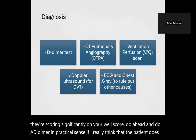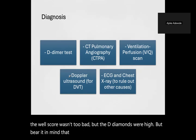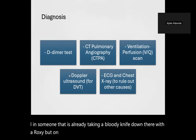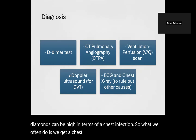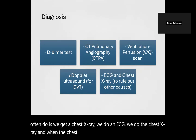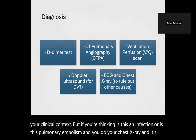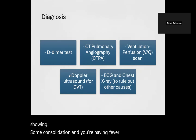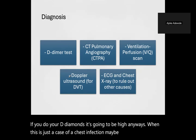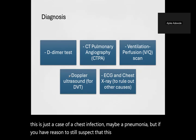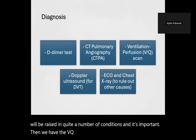Sometimes the Wells score is not too bad but D-dimers are high — bear in mind D-dimers can be elevated in someone already on anticoagulants like rivaroxaban, or in a chest infection. We often get a chest X-ray and ECG. If the chest X-ray shows consolidation with fever and raised inflammatory markers, the D-dimer will be high regardless. If you still need to rule out PE, go ahead with CTPA. D-dimers are raised in many conditions. You also have the VQ scan and Doppler ultrasound for DVT.